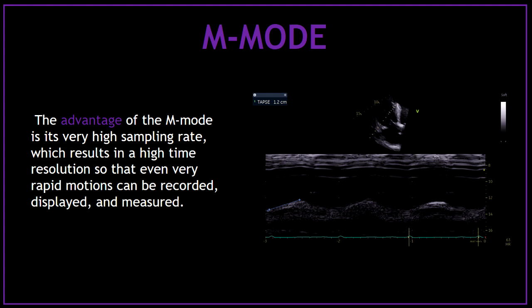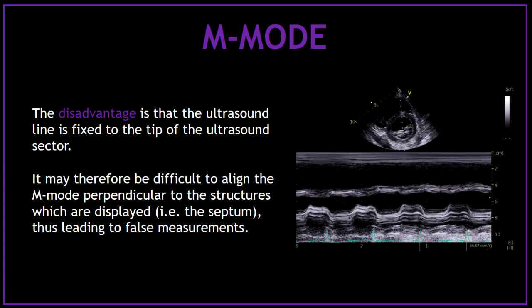The advantage of the M-mode is its very high sampling rate, which results in a high time resolution so that even very rapid motion can be recorded, displayed, and measured. The disadvantage of the M-mode is that the ultrasound line is fixed to the tip of the ultrasound sector. It might, therefore, be difficult to align the M-mode perpendicular to the structures which are displayed, leading to false measurements.